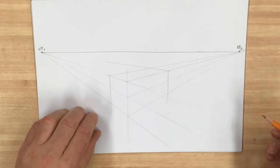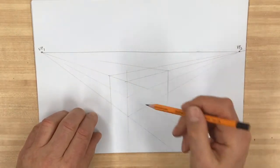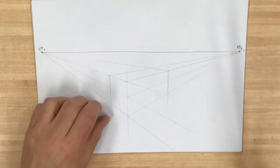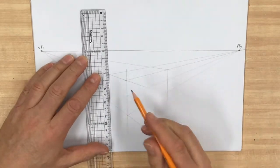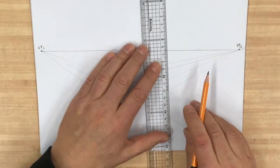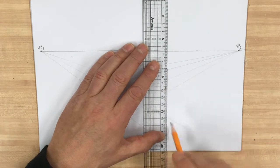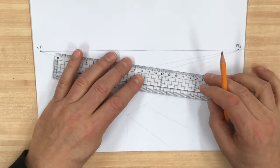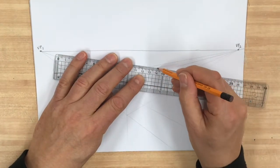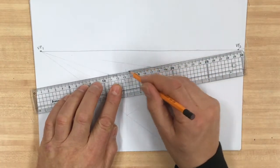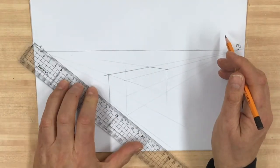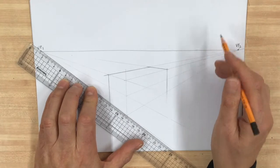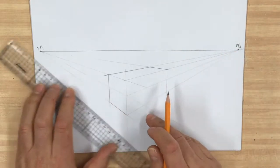I've got here my basic outline of the vehicle that I want to draw, and just so you can see it better I'm going to make it a little darker. It's already been constructed in two-point perspective, but I want you to be able to see exactly what I'm doing here.